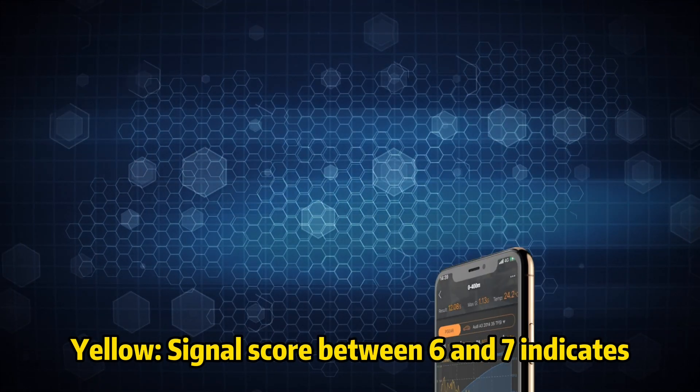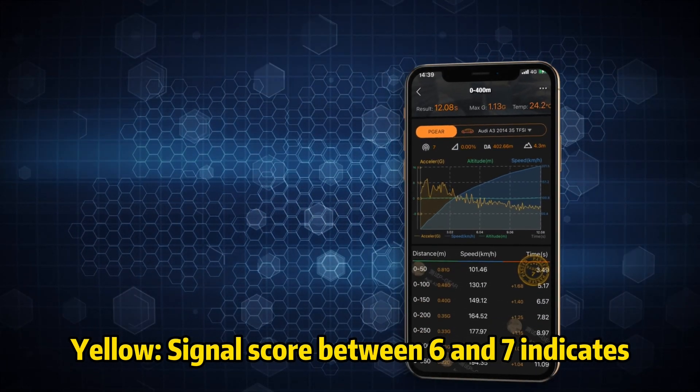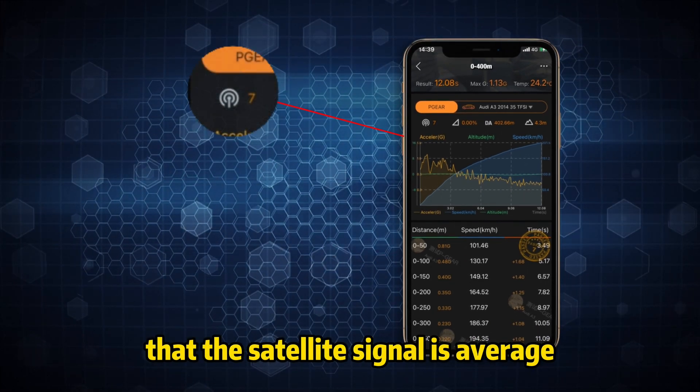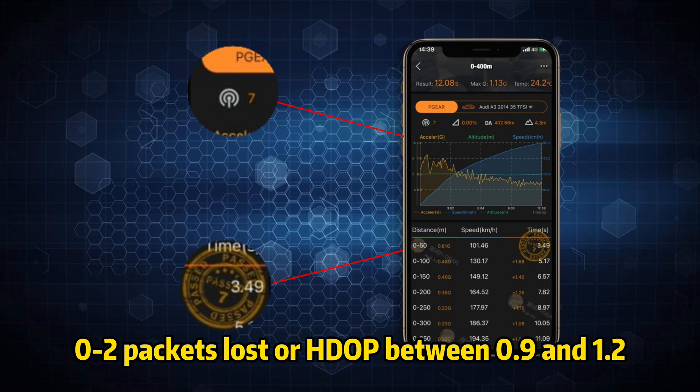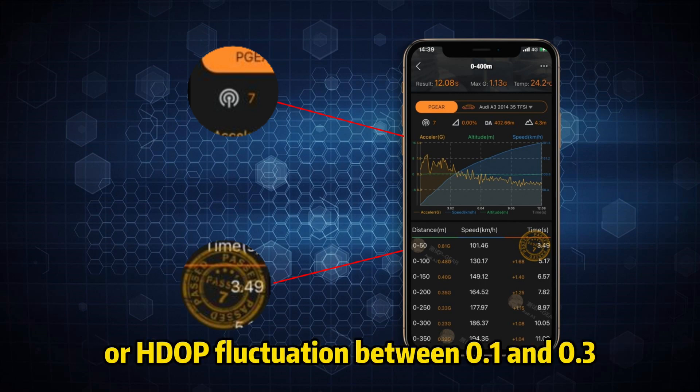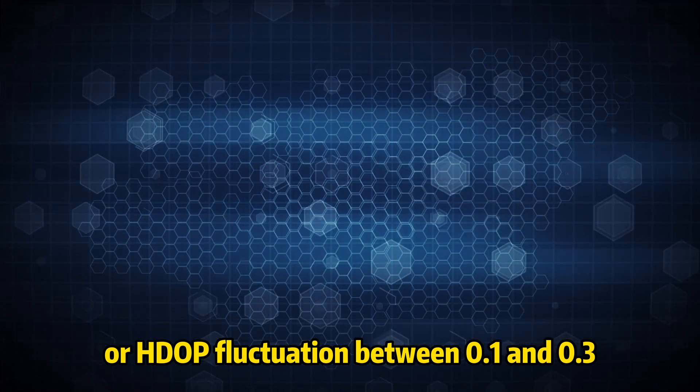Yellow signal score between 6 and 7 indicates that the satellite signal is average. Zero to two packets lost or HDOP between 0.9 and 1.2 or HDOP fluctuation between 0.1 and 0.3.